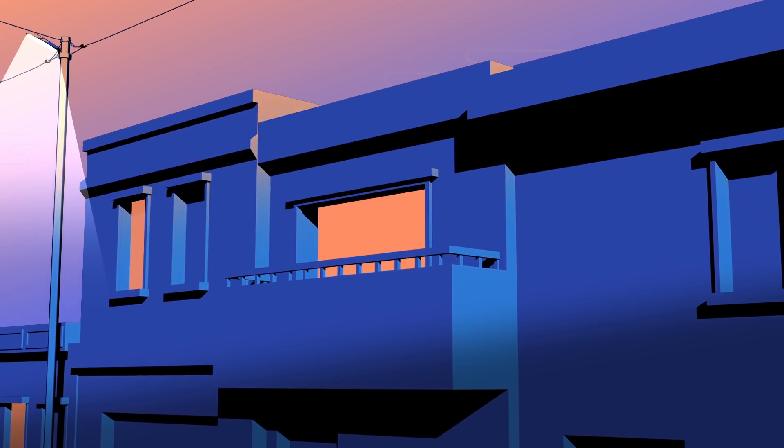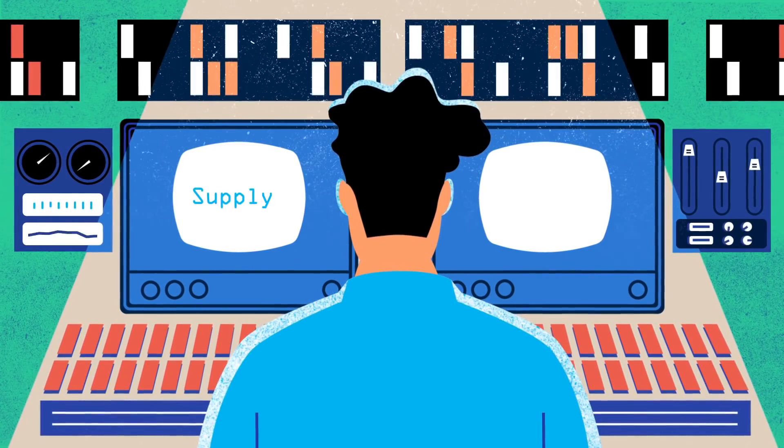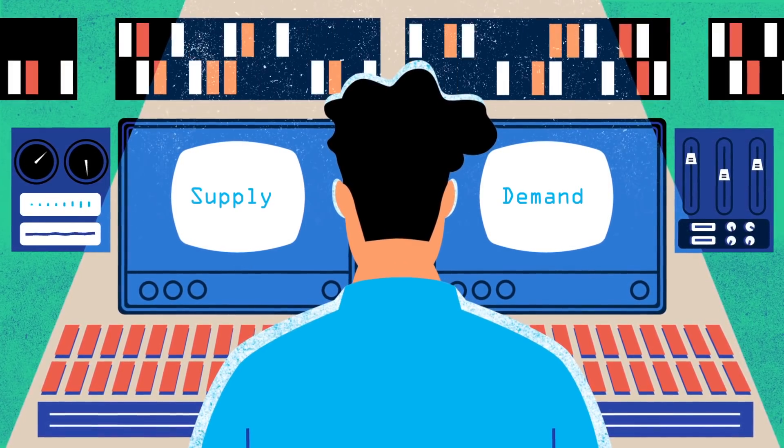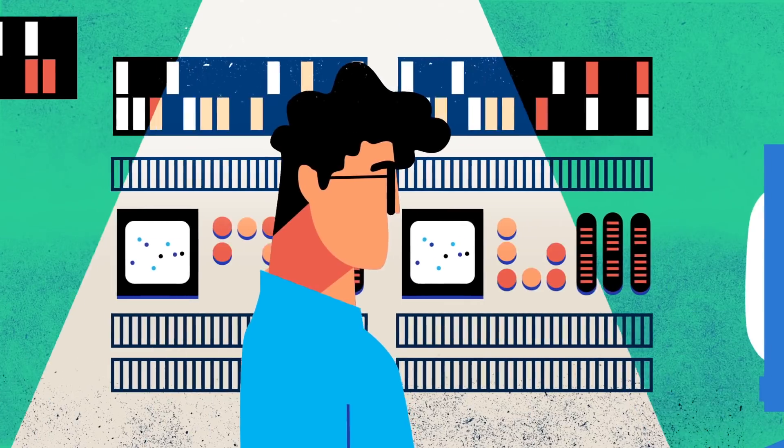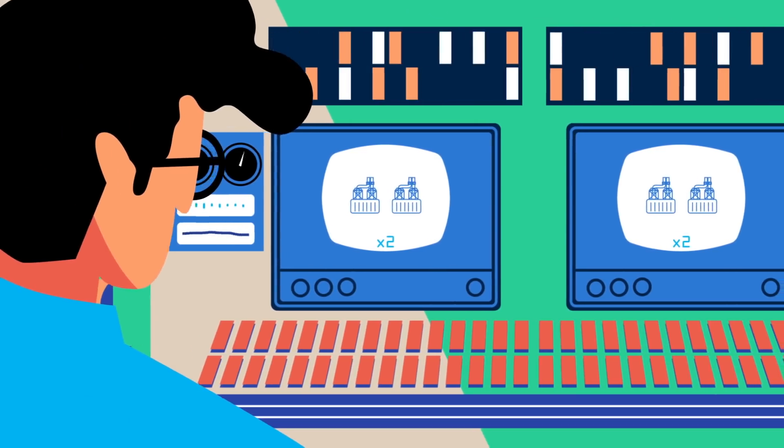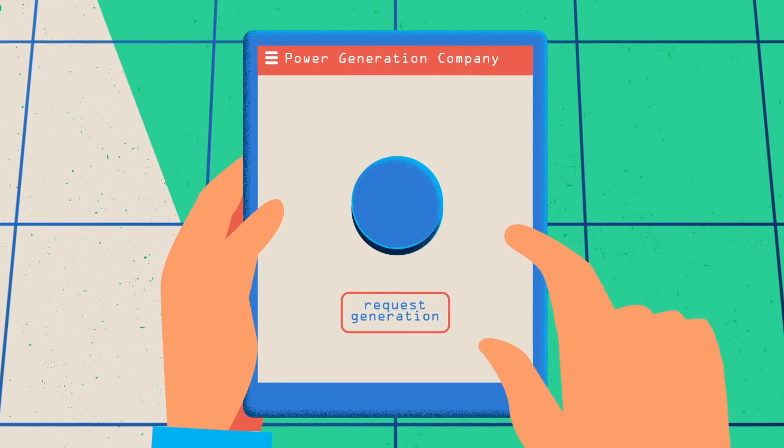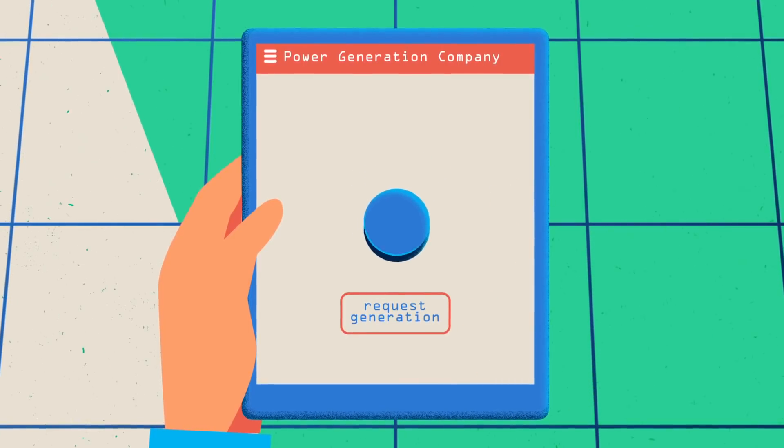Electricity is a resource that cannot be missing. Each country has an entity that manages electricity supply according to the population's energy consumption needs. This entity works 24-7 and is responsible for asking power generators to turn on as many plants as needed to generate the necessary power for everyone's needs.